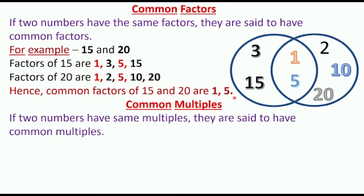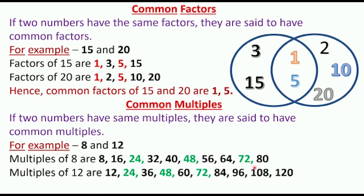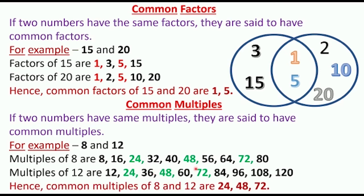Now, what are common multiples? If two numbers have the same multiples, they are said to have common multiples. For example, the multiples of 8 are 8, 16, 24, 32, 40, 48, 56, 64, 72, 80. The multiples of 12 are 12, 24, 36, 48, 60, 72, 84, 96. You can see only 3 multiples are common: 24, 48, and 72. Hence the common multiples of 8 and 12 are 24, 48, and 72.